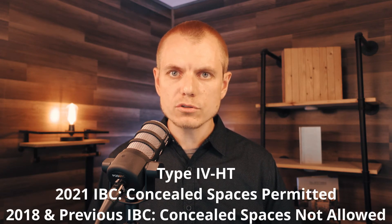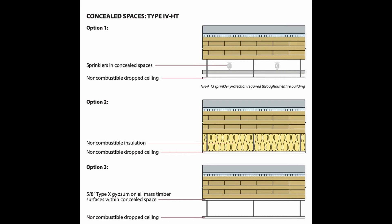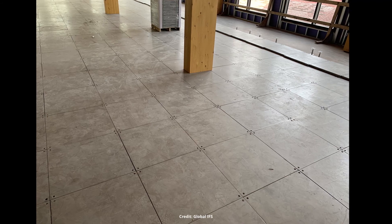Within the 2021 IBC, Type 4HT projects now permit concealed spaces — previously, concealed spaces were prohibited in Type 4 construction (now renamed 4HT). The 2021 IBC gives three prescriptive options: first, sprinkler the concealed space; second, fill it with non-combustible insulation; third, protect all mass timber surfaces within that concealed space with a layer of 5/8" Type X gypsum wallboard. This works well for a drop ceiling below a mass timber floor panel.